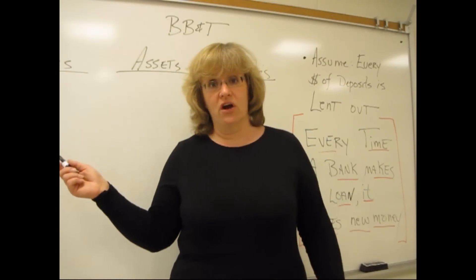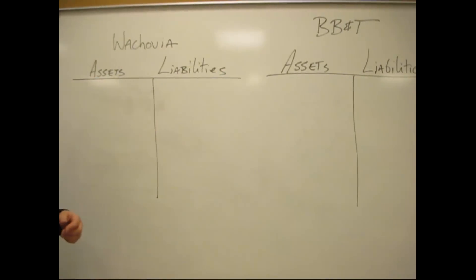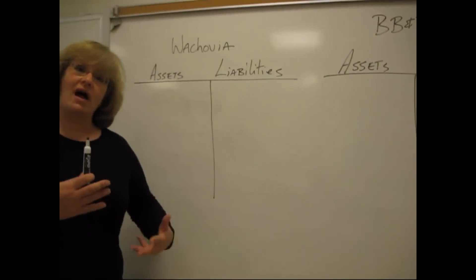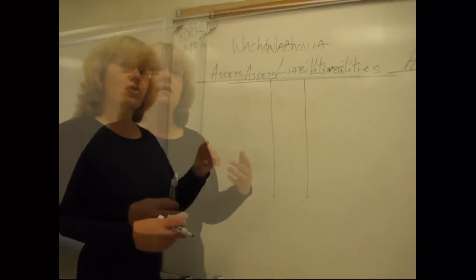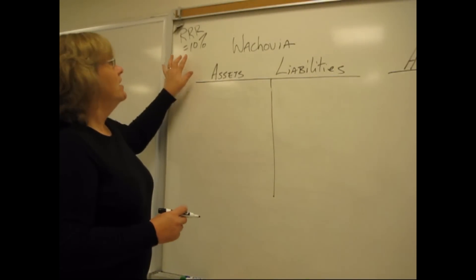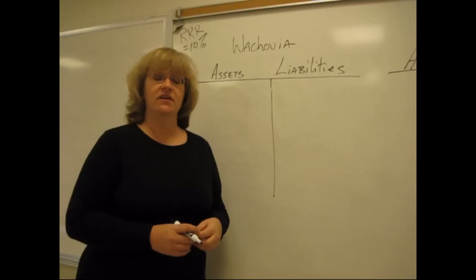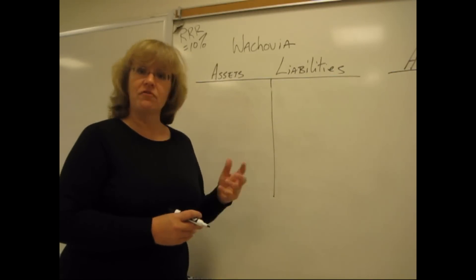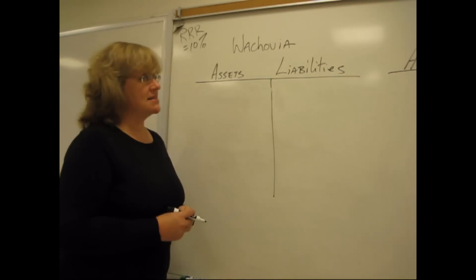Now, we're going to start over here, and I'm going to use that T account mechanism that we talked about in the earlier video to describe how multiple deposit creation works. We're going to assume, our second assumption here, that the required reserve ratio for this particular system is 10%. Remember, the first one was that banks are going to lend out every dollar they can when they get deposits in.